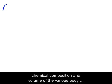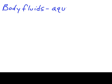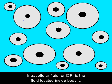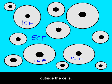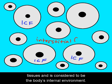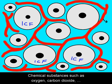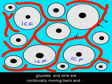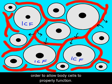Homeostasis plays a major role in maintaining the chemical composition and volume of the various body fluids, which are the water-based aqueous solutions found inside and outside cells. Intracellular fluid, or ICF, is the fluid located inside body cells, and the extracellular fluid, or ECF, is found outside the cells. Interstitial fluid is the ECF found between the cells of tissues and is considered to be the body's internal environment. Chemical substances such as oxygen, carbon dioxide, glucose, and ions are continually moving back and forth between the interstitial fluid and blood plasma in order to allow body cells to properly function.